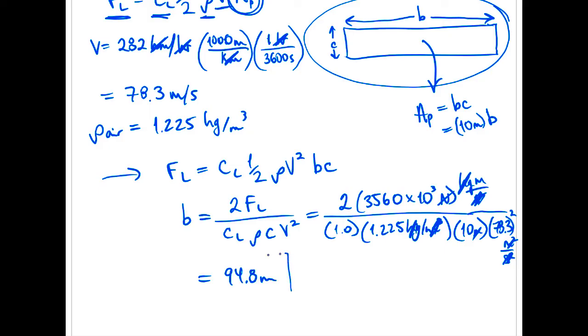Okay, we boxed that off, of course, so everybody knows what our answer is. And ask ourselves if that makes sense. The cord is 10 meters long, so that's a big wing to begin with. So not overly surprising that we'd need 94.8 meters total length. That's a big aircraft, and that's a lot of weight, 3560 kilonewtons. All right, so that's part A.